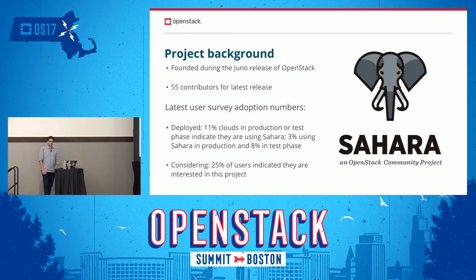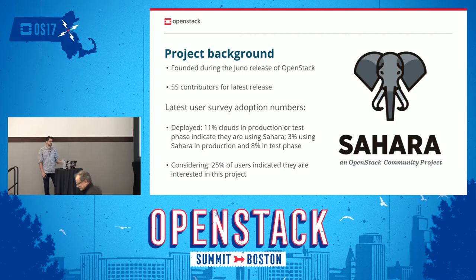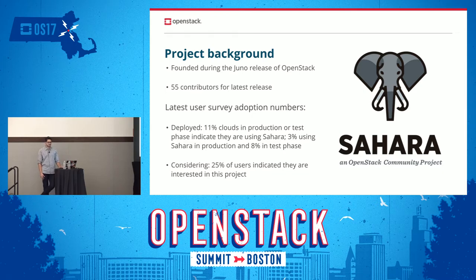Sahara was founded during the Juno release of OpenStack, and in this latest release we had contributions from 55 people, but actively there were like nine or ten. Most of the contributors just wrote one patch or did a small review or something, but active contributors would be a small group of nine to ten people. At the latest survey, it said that 11% of the clouds in production or test phase indicated they are using Sahara. With that 11%, 3% said they were in production and 8% used it in the test phase. And 25% of the people in the survey said they're considering using Sahara in their clouds.